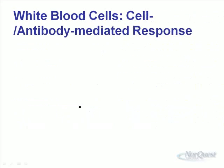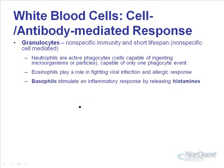Now we'll look at the white blood cells. Once we get past those barrier responses, we look at the cell and antibody-mediated responses. Granulocytes are nonspecific immunity — they have a short lifespan and are a type of white blood cell that are phagocytes for the most part. Most granulocytes try to digest foreign invaders. Neutrophils are active phagocytes capable of only one phagocytotic event — they'll engulf something, explode, and then they're done. Eosinophils play a role in fighting viral infections, and basophils are the ones releasing histamines.